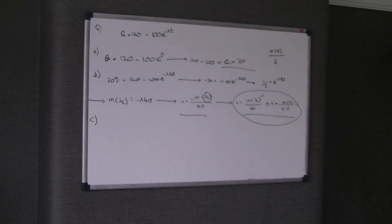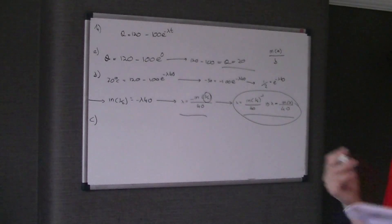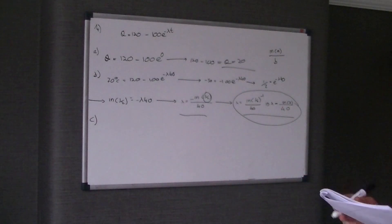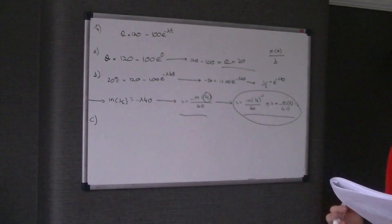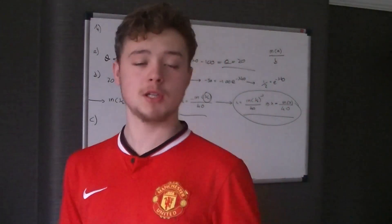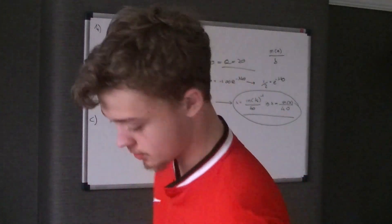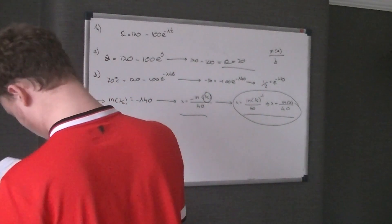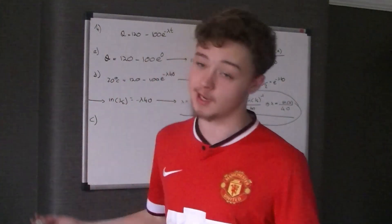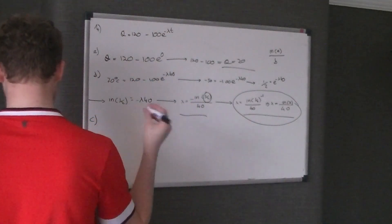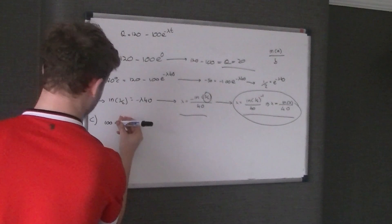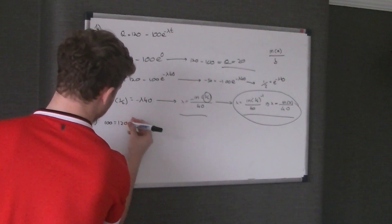So part c. Part c says when t equals t, so just find t essentially. The temperature of the water reaches 100 degrees and the kettle switches off. Calculate the value of t to the nearest whole number. Now if you were being a physicist about this you could work out all kind of things. We're not physicists. We're just mathematicians. You put it equal to 100. Because all we're doing is using the formula above.